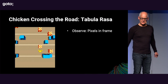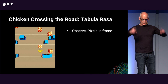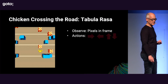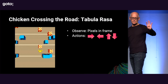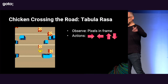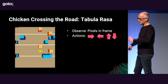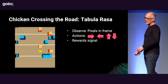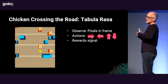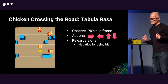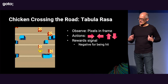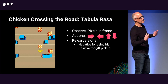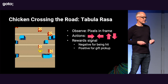Having the computer only see frame by frame, 80 by 80 pixels, taking four actions — one, two, three, four — we know it means going left, right, forward, backward. The computer knows nothing about that. And then get the reward signal, which is basically negative for being hit by a car and positive for collecting a gift package.